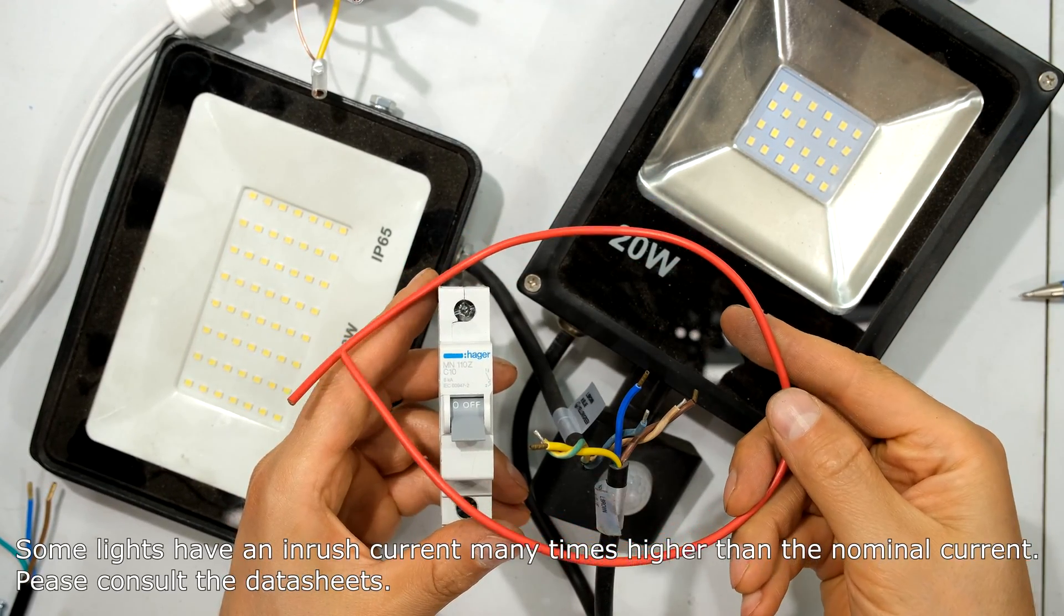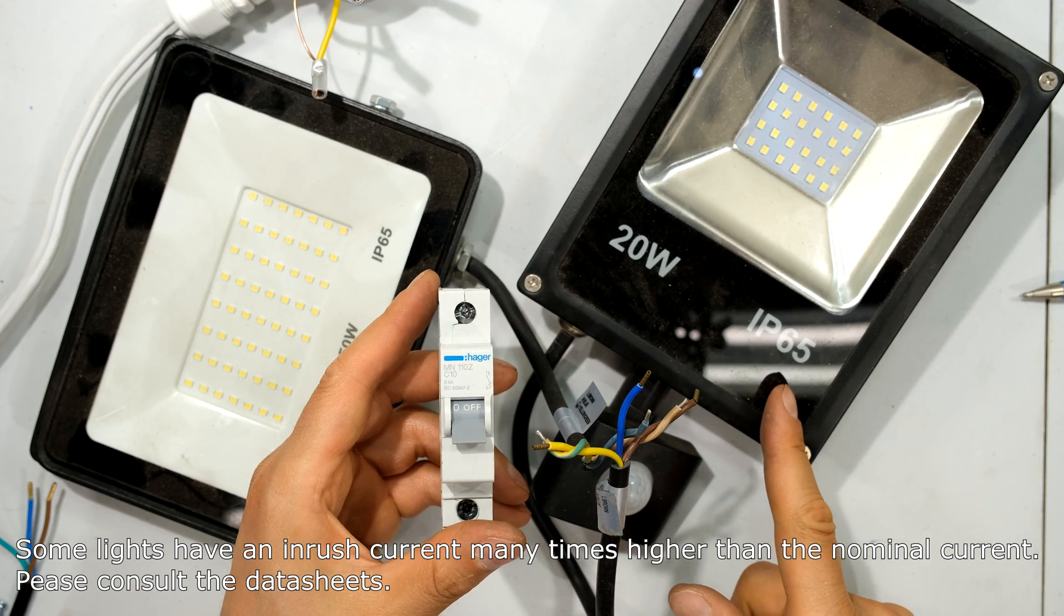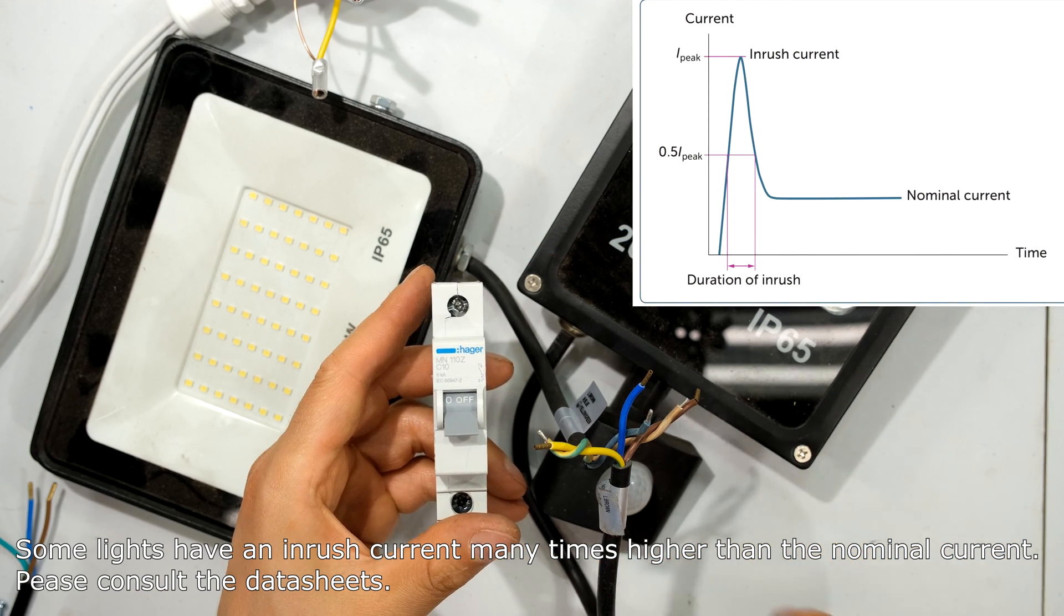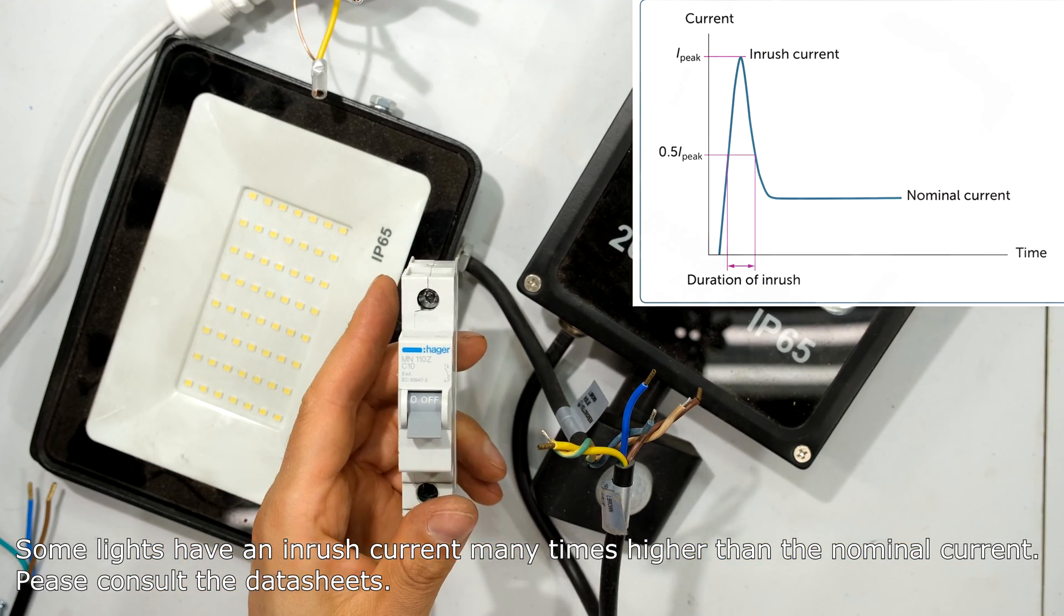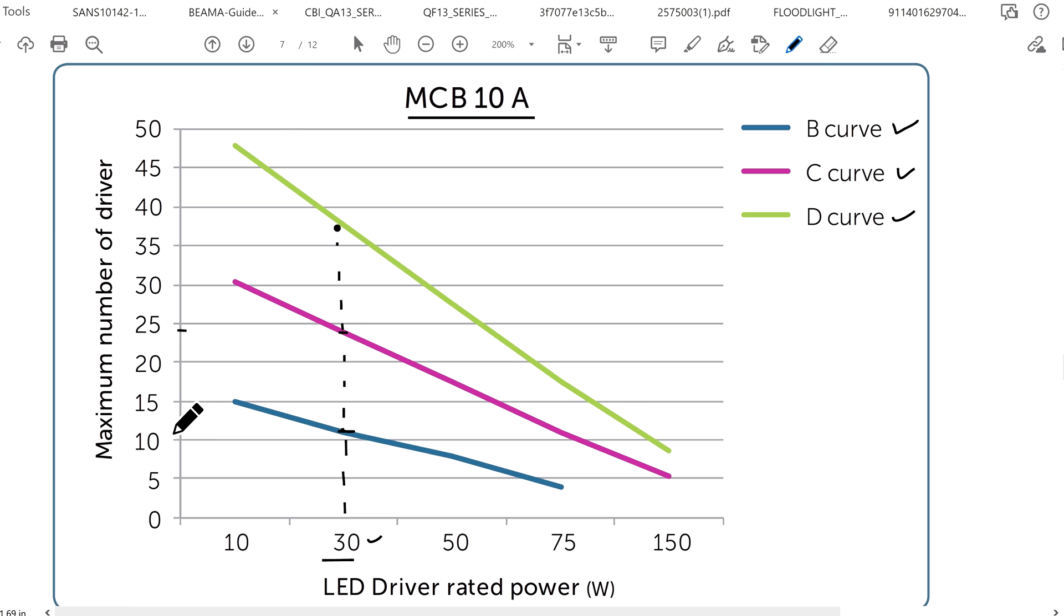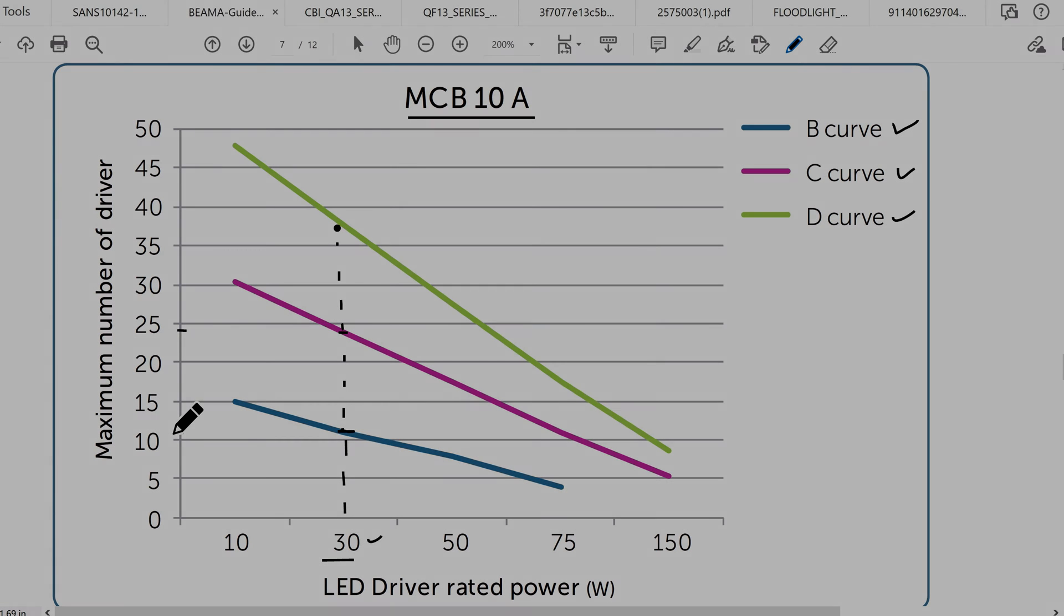And you can keep adding additional lights as long as the circuit breaker and the wiring can handle the inrush current, the collective inrush current of all the lights that you have added as your loads. For more details on the inrush current and selecting your LED lights versus circuit breakers, please check out my videos in my playlist called Electrical Tutorials. I will post the link in the description under the video.